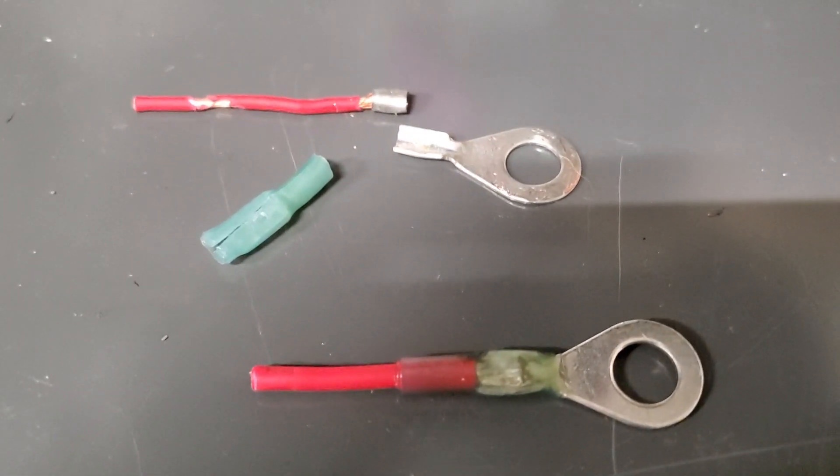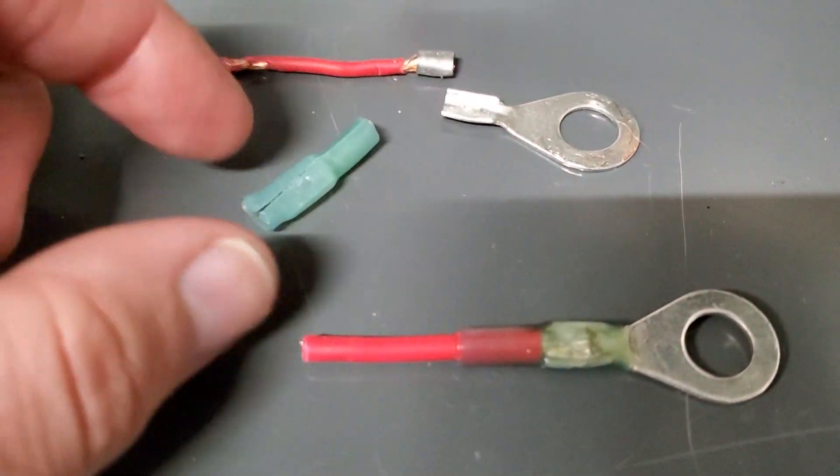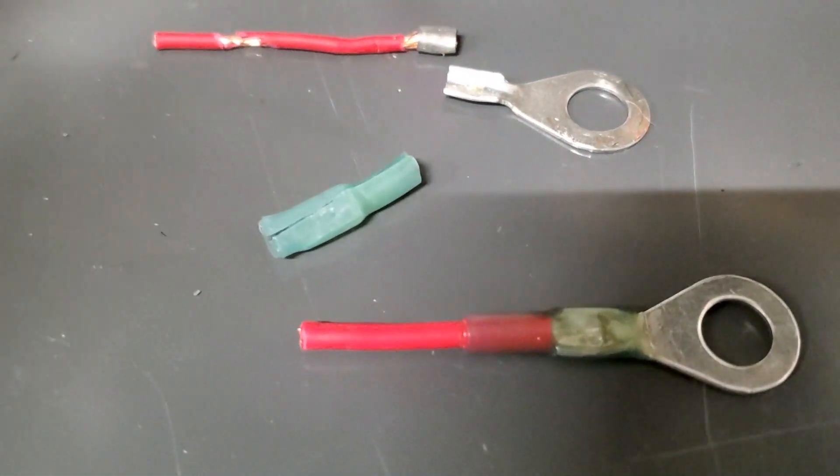We used to have a crimp and seal which looks very similar. You crimp it, heat shrink it, and you're done.